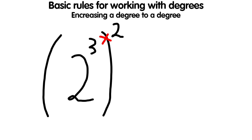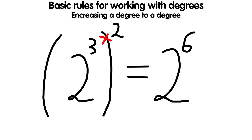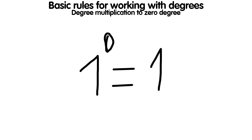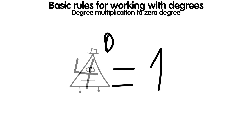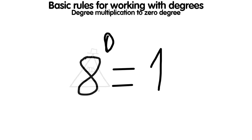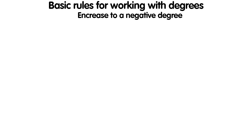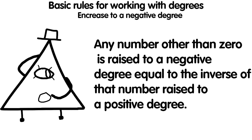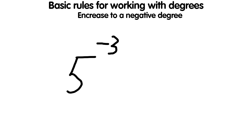Any number other than zero raised to the zero degree equals 1. For example, 8 to the zero power equals 1. Any number other than zero raised to a negative degree equals the inverse of that number raised to the corresponding positive degree. For example, 5 to the minus third equals 1 divided by 5 to the third.